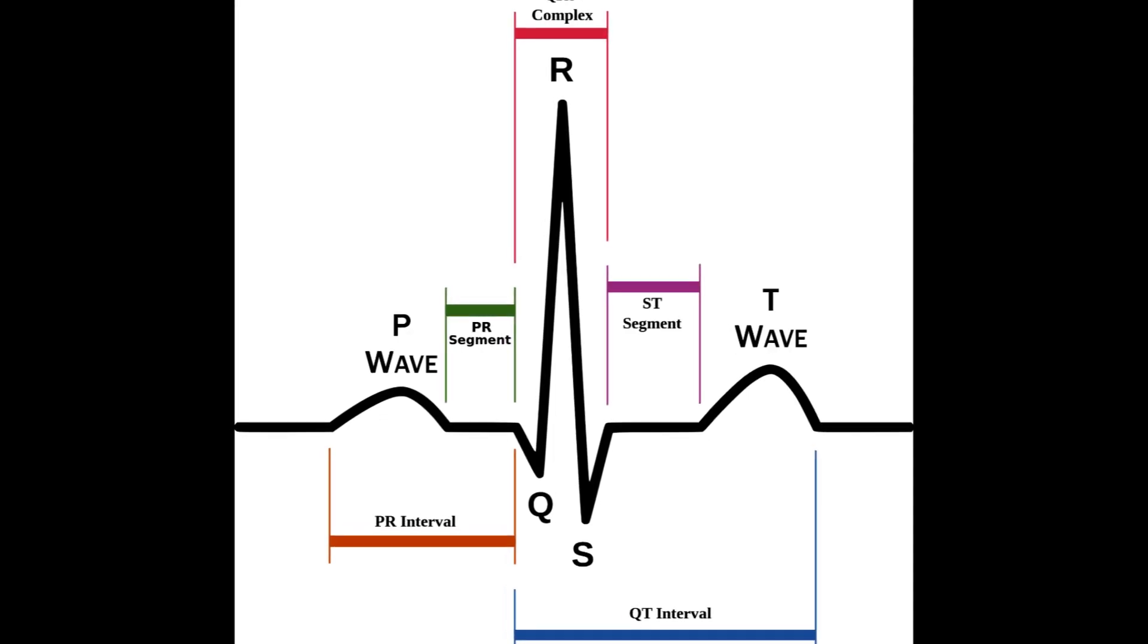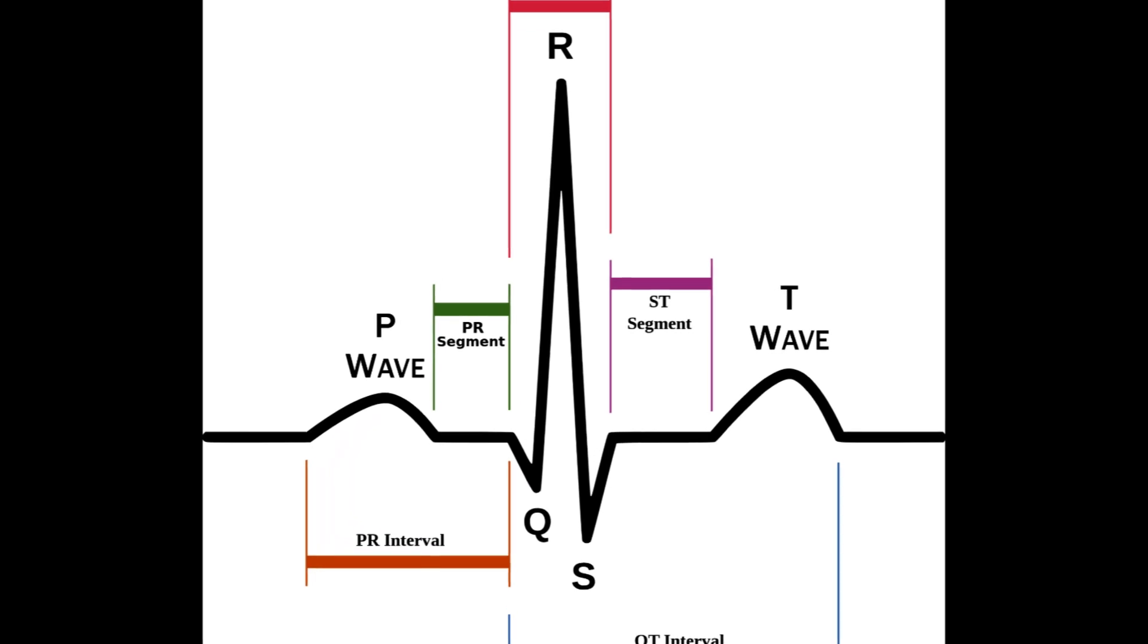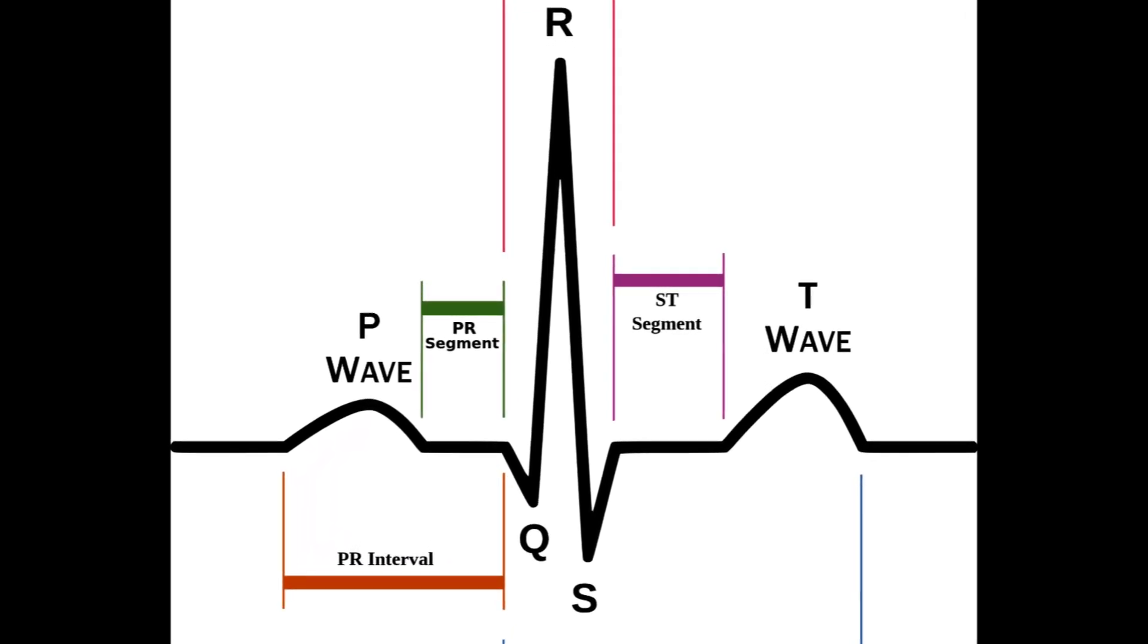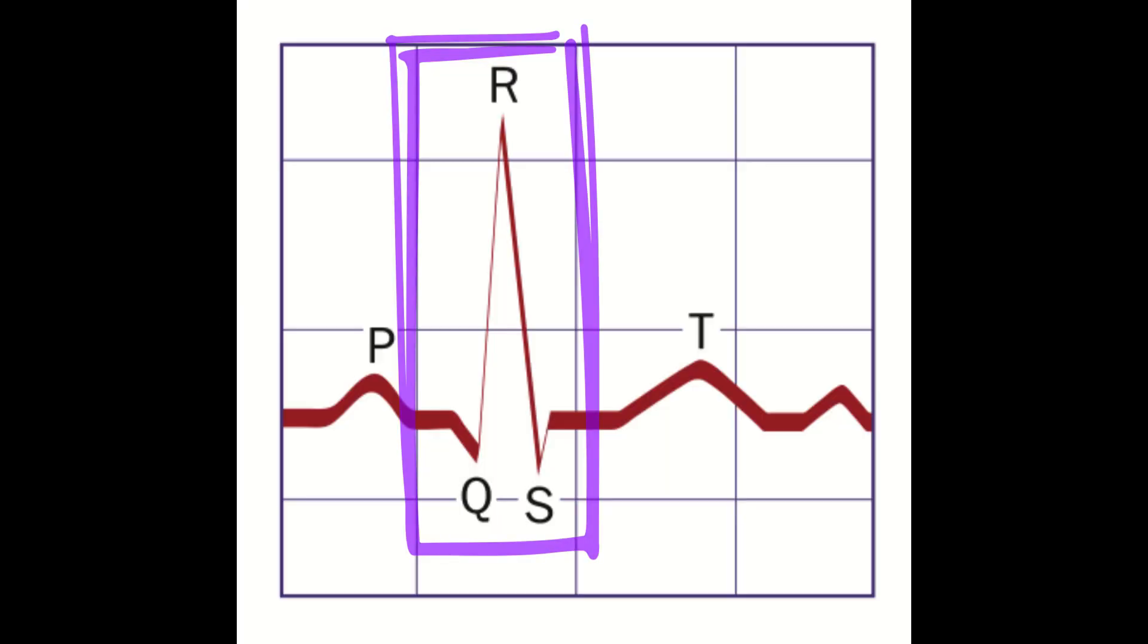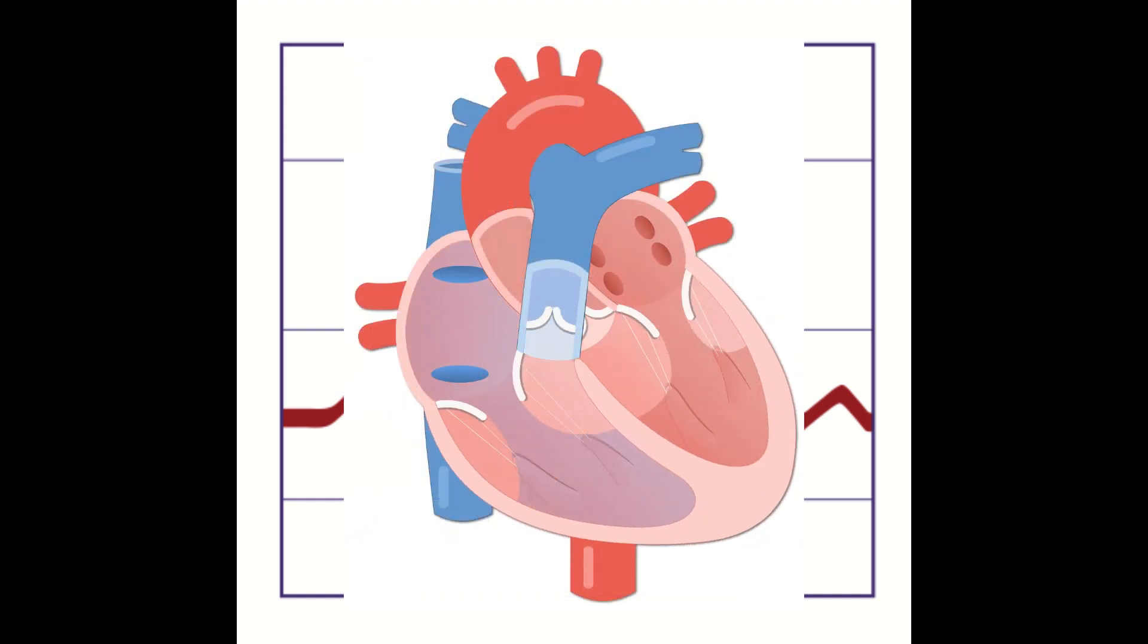In this tutorial, we will go over the basic characteristics of the QRS complex and how to measure it accurately. What is the QRS complex? The QRS complex is a wave pattern on an EKG that represents the electrical activity of the ventricles of the heart.